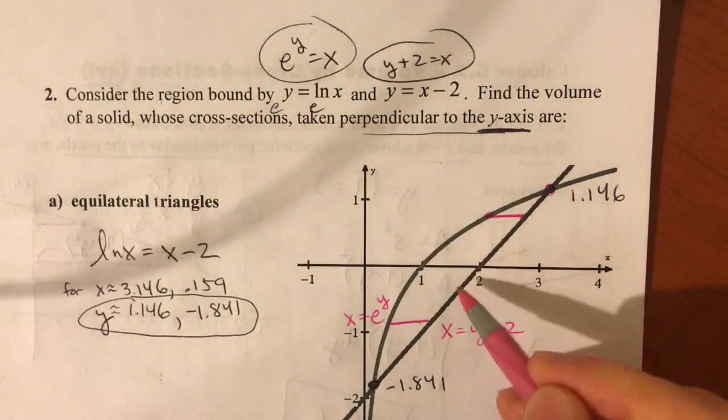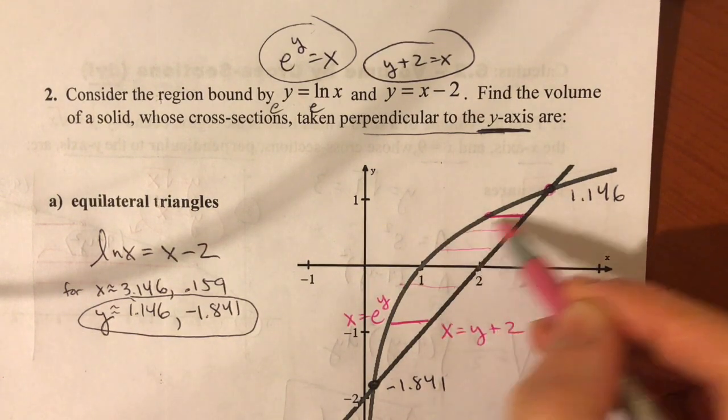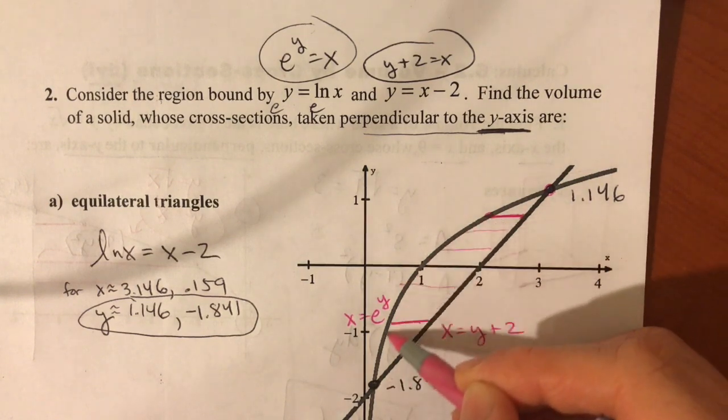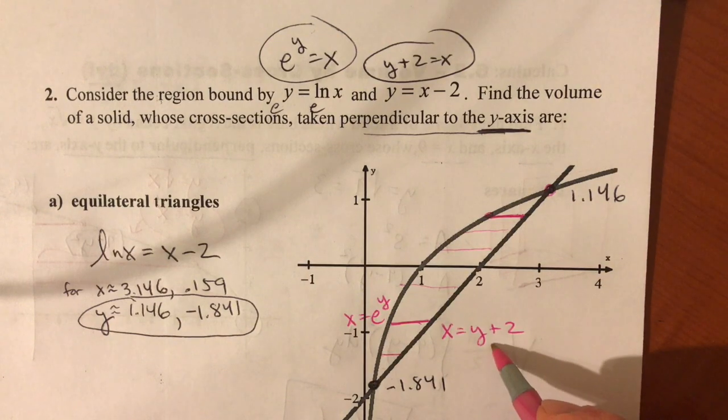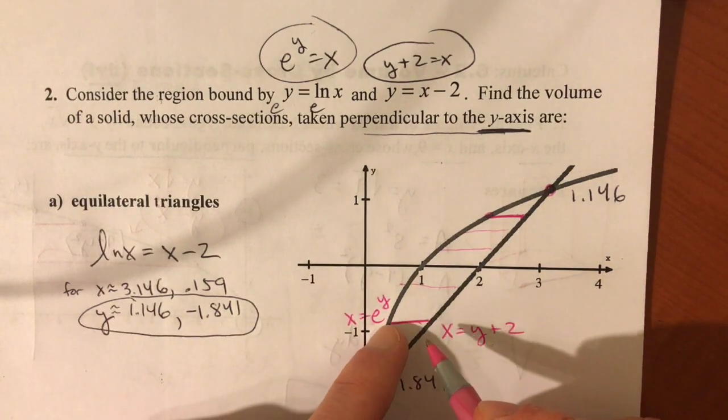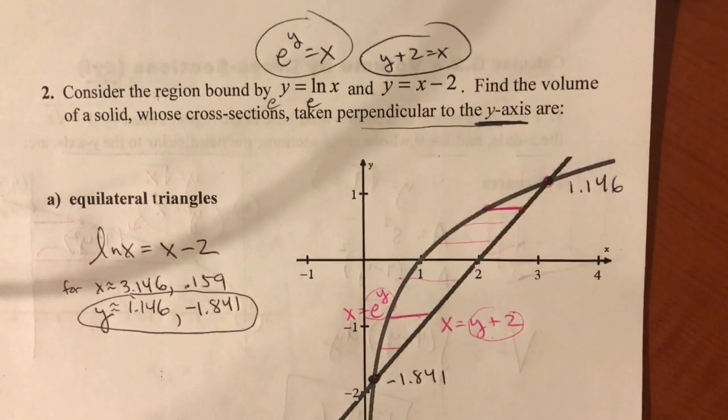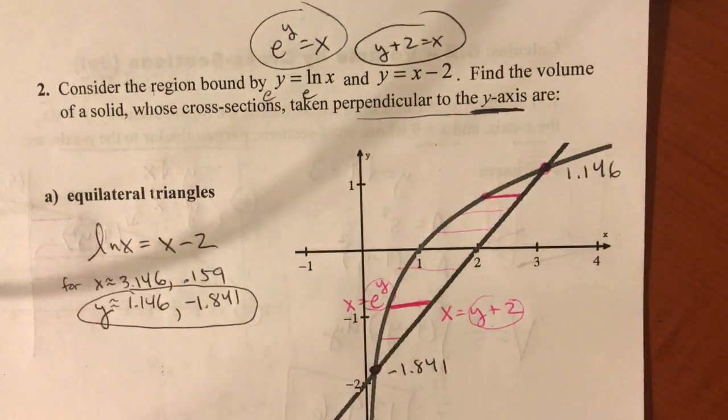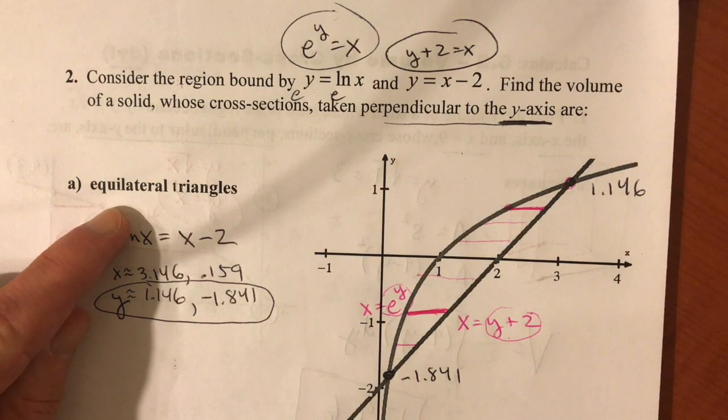And no matter where you're at in this region, that distance between those will always be bound by this graph on the right side and this graph on the left side of the region. So it will always be the right minus the left. This x value minus this x value, which would always be y plus 2 minus e to the y. So that distance right there.